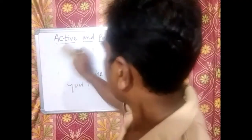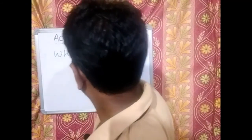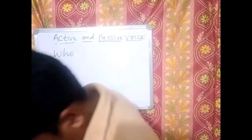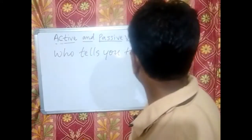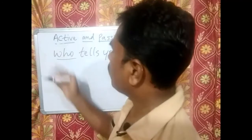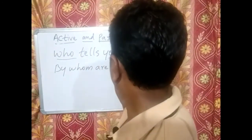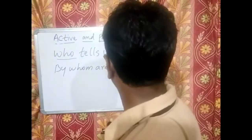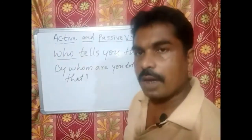Another example with 'who': the sentence is 'Who tells you that?' Whenever 'who' is used, 'by' comes at the beginning and it becomes 'by whom.' So the passive form is: By whom are you told that? These were some examples about interrogative sentences — affirmative interrogative.